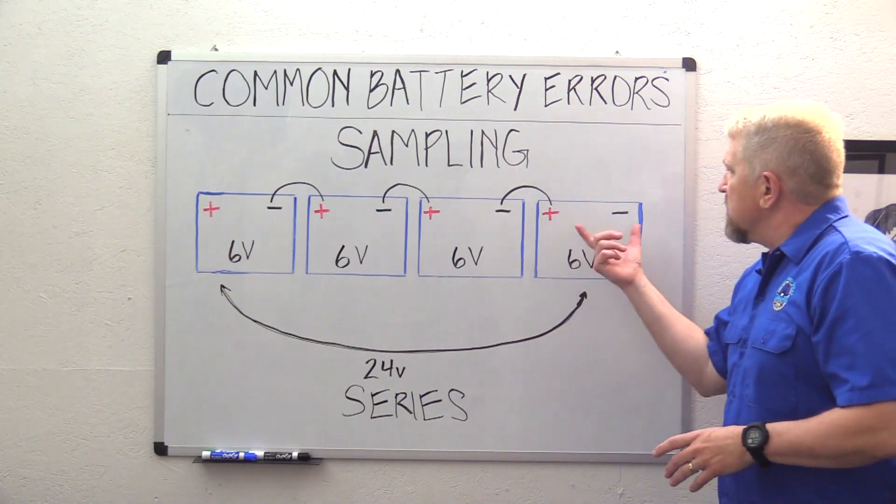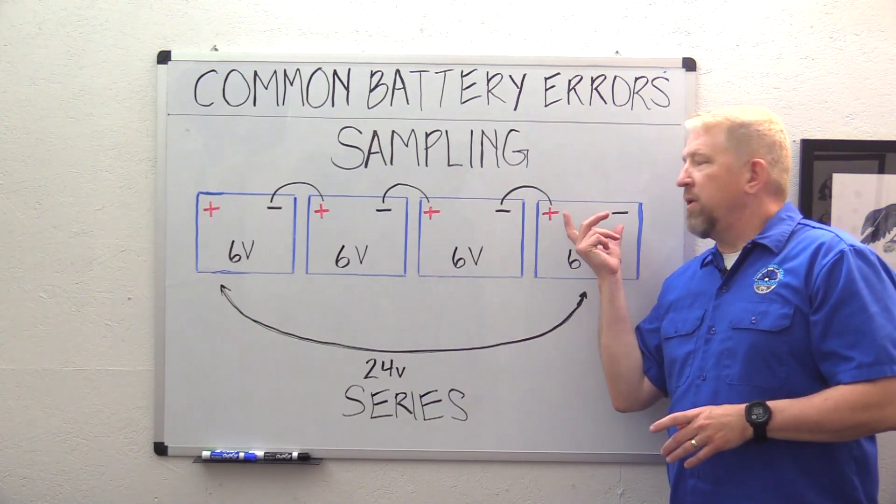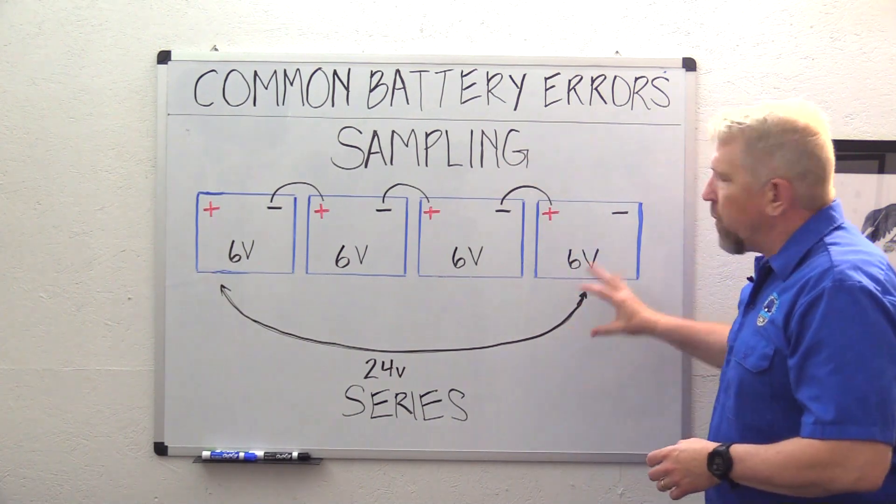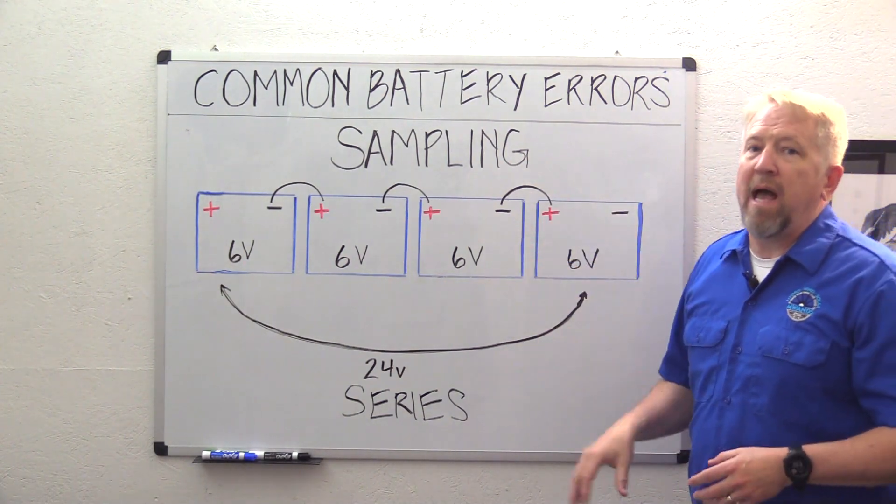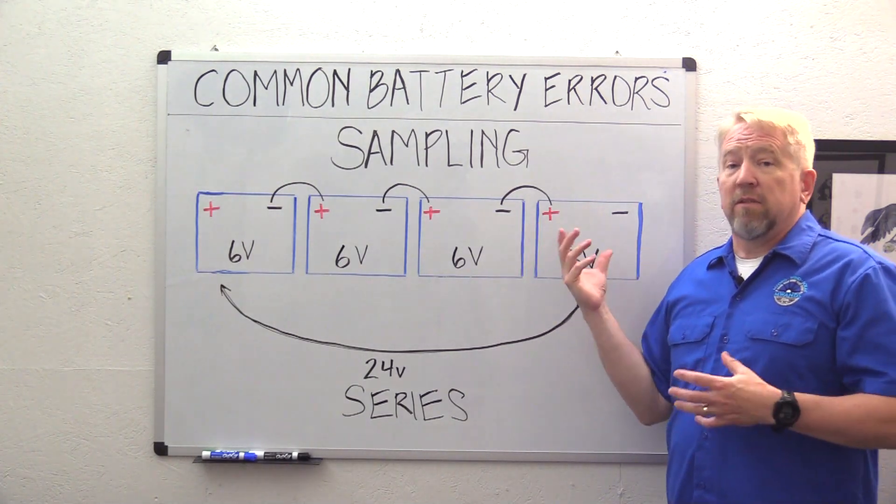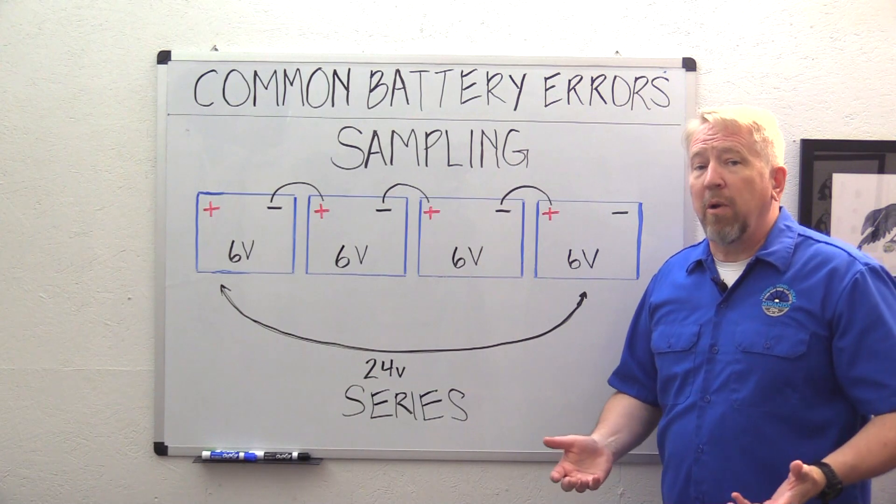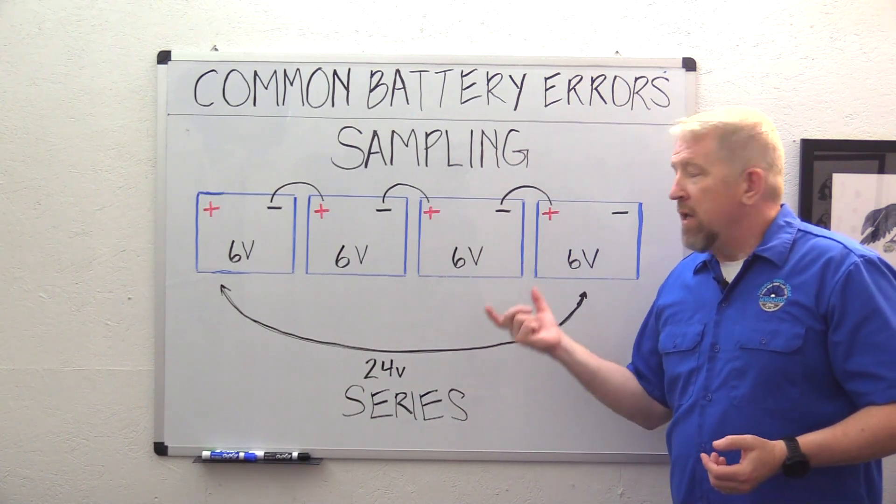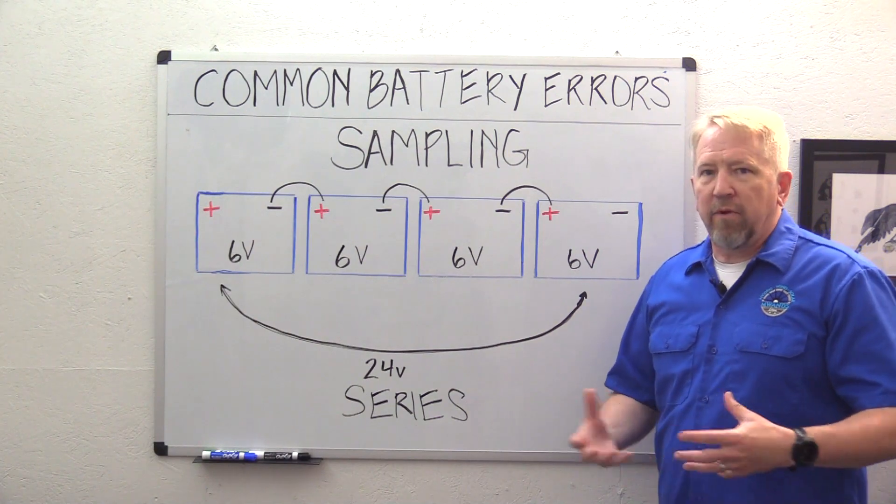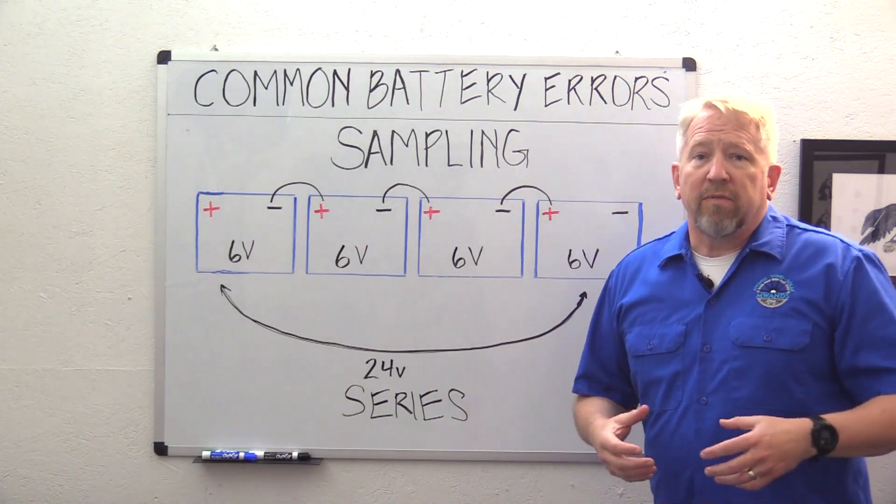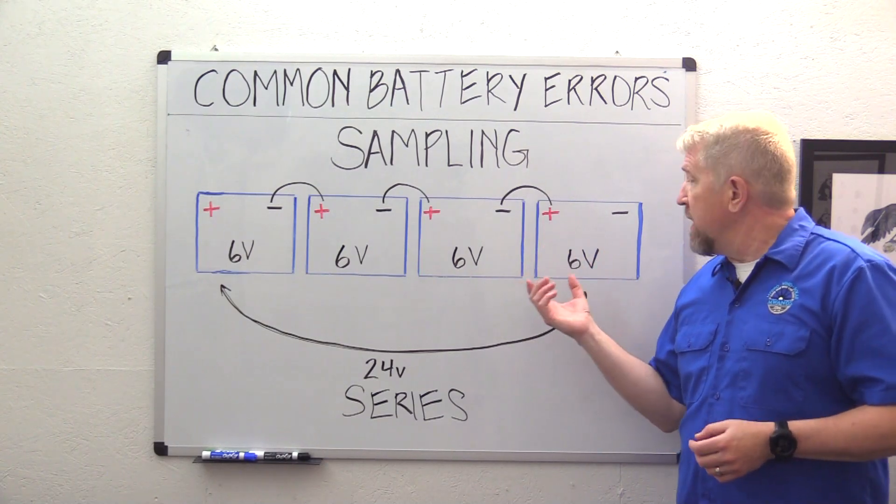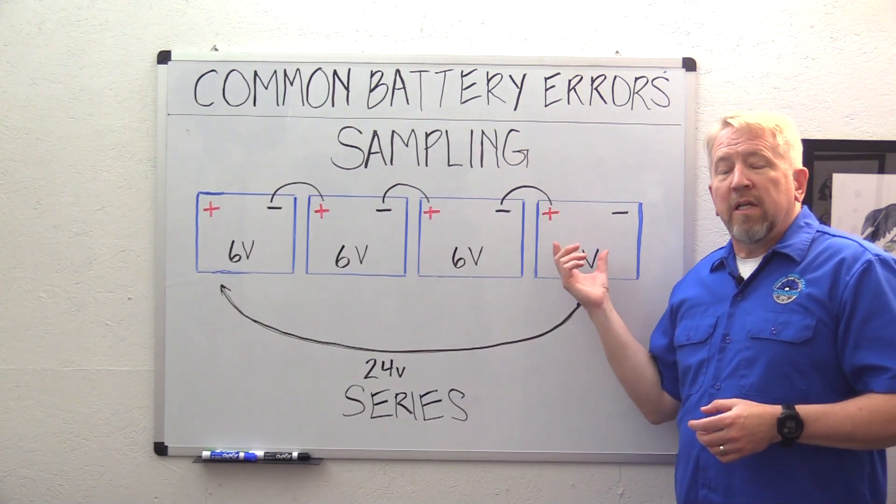Now, what does this do? So if we came in here and we just put our inverter on this first battery, what we're doing is we're putting our load on this one battery. And so besides putting an excessive load on that battery and probably wearing it out before it's time, we're only going to get six volts out of this. And so our inverter probably won't even start properly. We're going to have some issues with that. It's just not going to work.